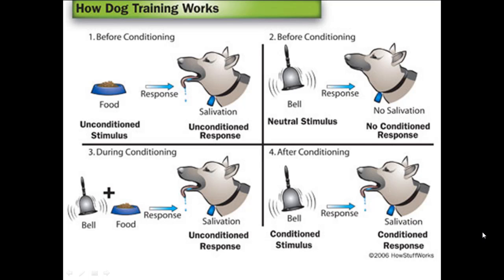Probably the most famous example of conditioning is to do with a guy called Pavlov, who did a lot of work modelling conditioning in dogs. This diagram here shows us the methodology that he used. The first thing he did was present the dog with food, and the dog began to salivate. We can think of the food as our primary stimulus — it is the thing shown to the dog that caused the response, and the response in this case is salivation.